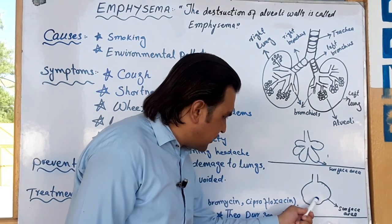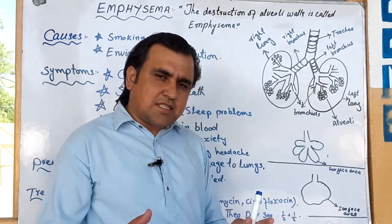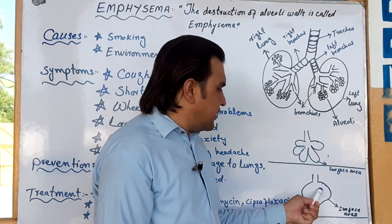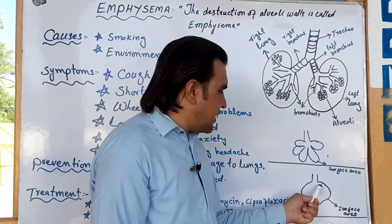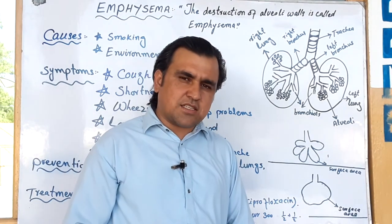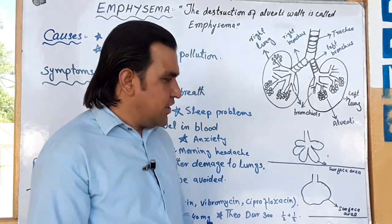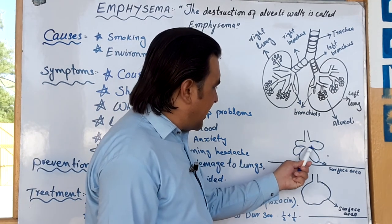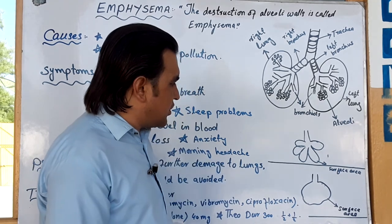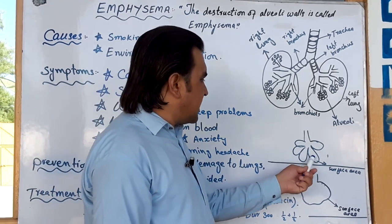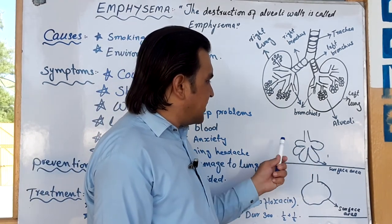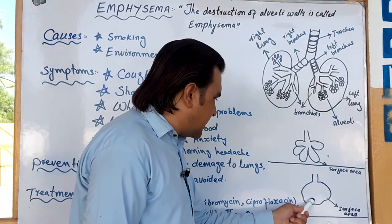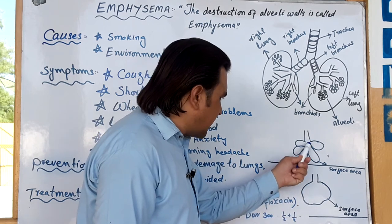In Emphysema, the volume of the lungs is increasing and the surface area is decreasing. The surface area is very important for gas exchange. As the disease progresses, the volume increases and the surface area decreases.